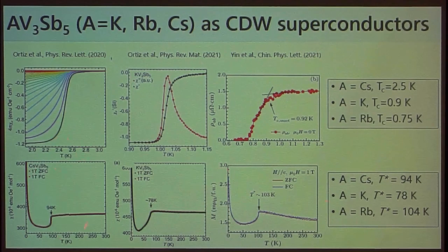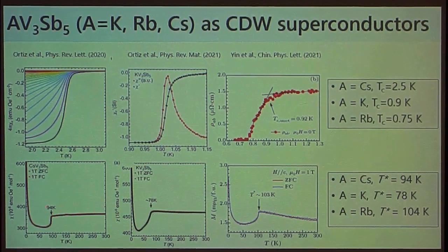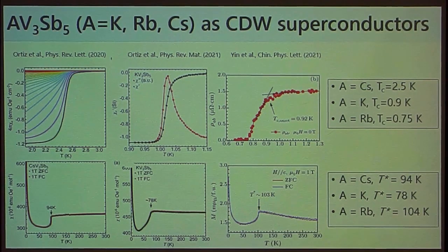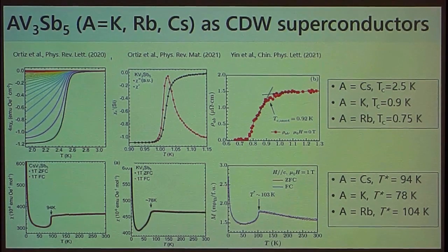These systems are charge-density-wave superconductors. As you cool down, all three variants behave qualitatively similarly: there's a higher-temperature phase transition corresponding to the onset of charge density wave order. Focusing on the cesium variant, at high temperature the system is a paramagnet. Below 94 K you see a drop in the density of states corresponding to CDW onset, and then below about 2.5 K the system becomes a superconductor. The potassium and rubidium variants behave qualitatively similarly, just with different TC of about 0.9 and 0.8 K respectively and slightly different CDW onset temperatures.